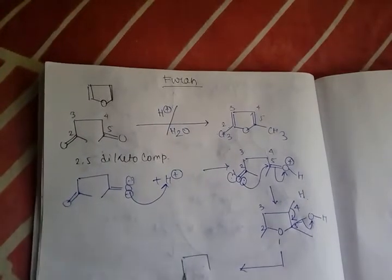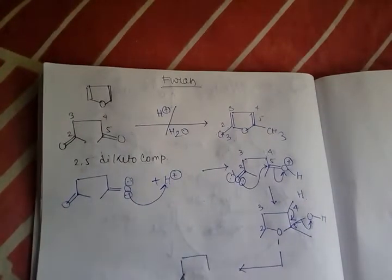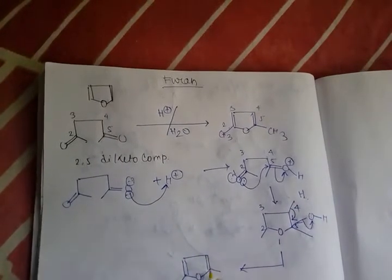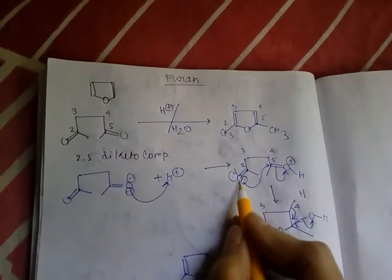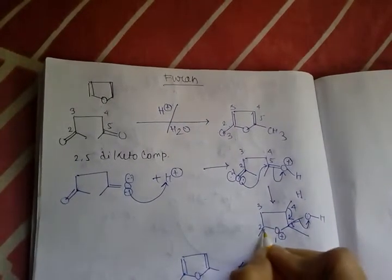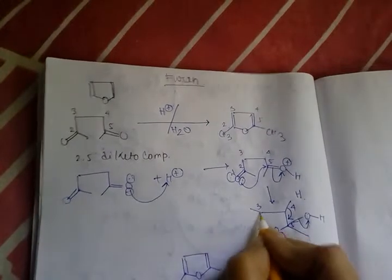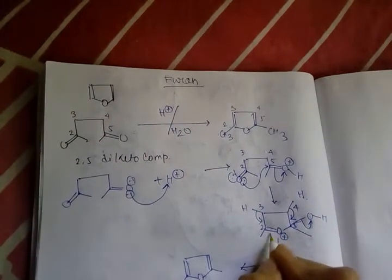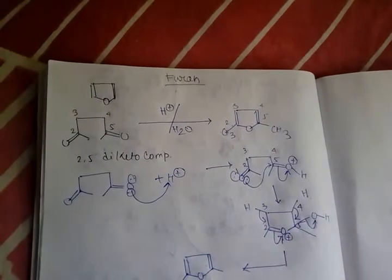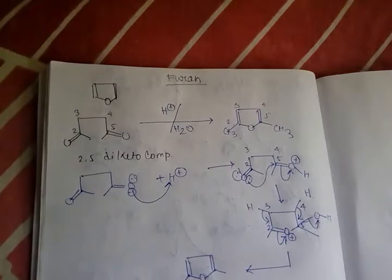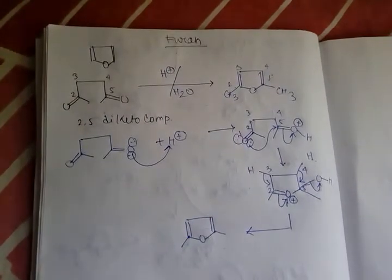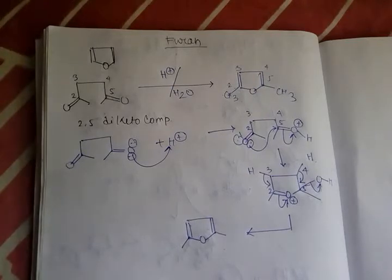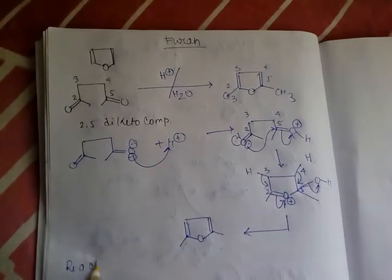The OH minus captures the H+ and forms H2O. A double bond is present, and the hydrogen on C3 carbon rotates, this bond breaks, and ultimately the product we get is 2,5-dimethylfuran. Now we will discuss about the reactivity of furan.